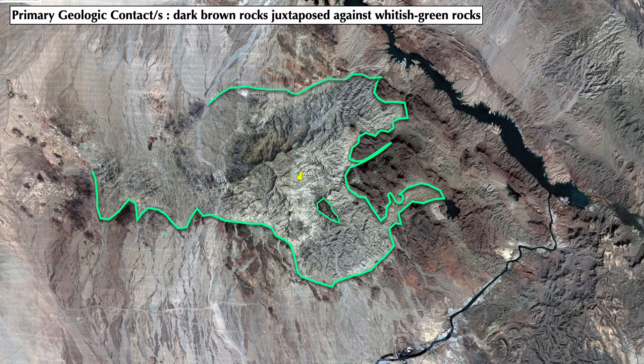I then asked about the most prominent geologic contacts. In addition to the subtle ones, there's a very glaring contact showing up between these dark brown rocks juxtaposed against whitish rocks in the center of the image. In general, you get the impression that the white rocks are concentrated in the core of the mountain range, while the dark brown rocks are concentrated around the flanks of that higher-topography mountain range core.